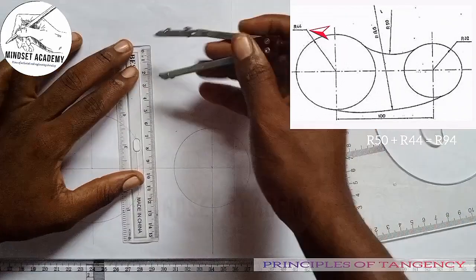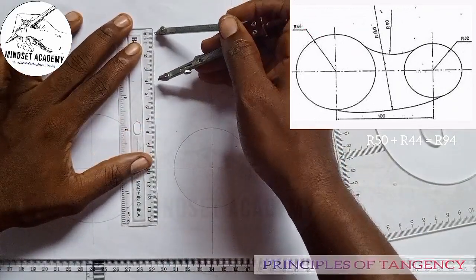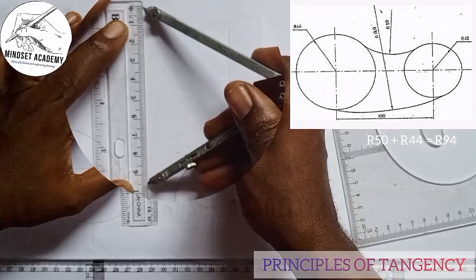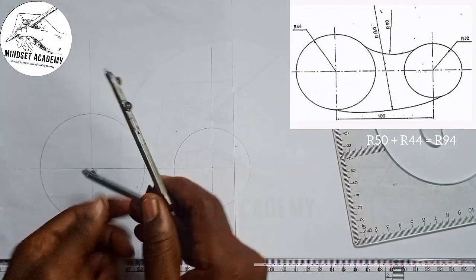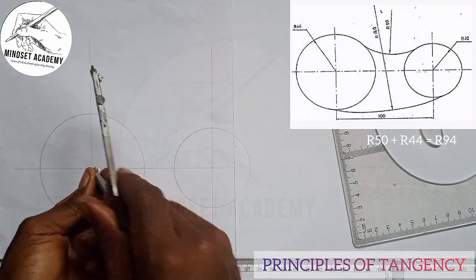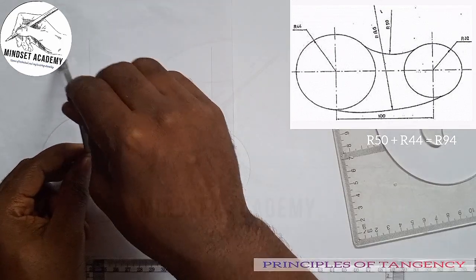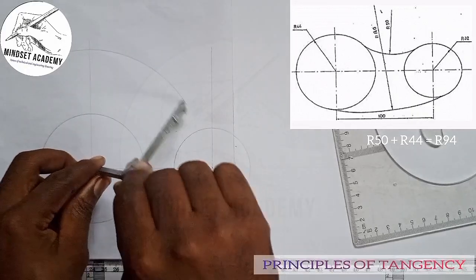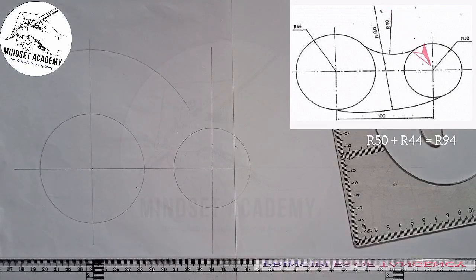So 50 plus 44 gives us 94. I'm going to take my metal rule and measure 94 from 0 — this is 90 and it is 94 here. I'll place it at the center of this circle and strike an arc in this manner.